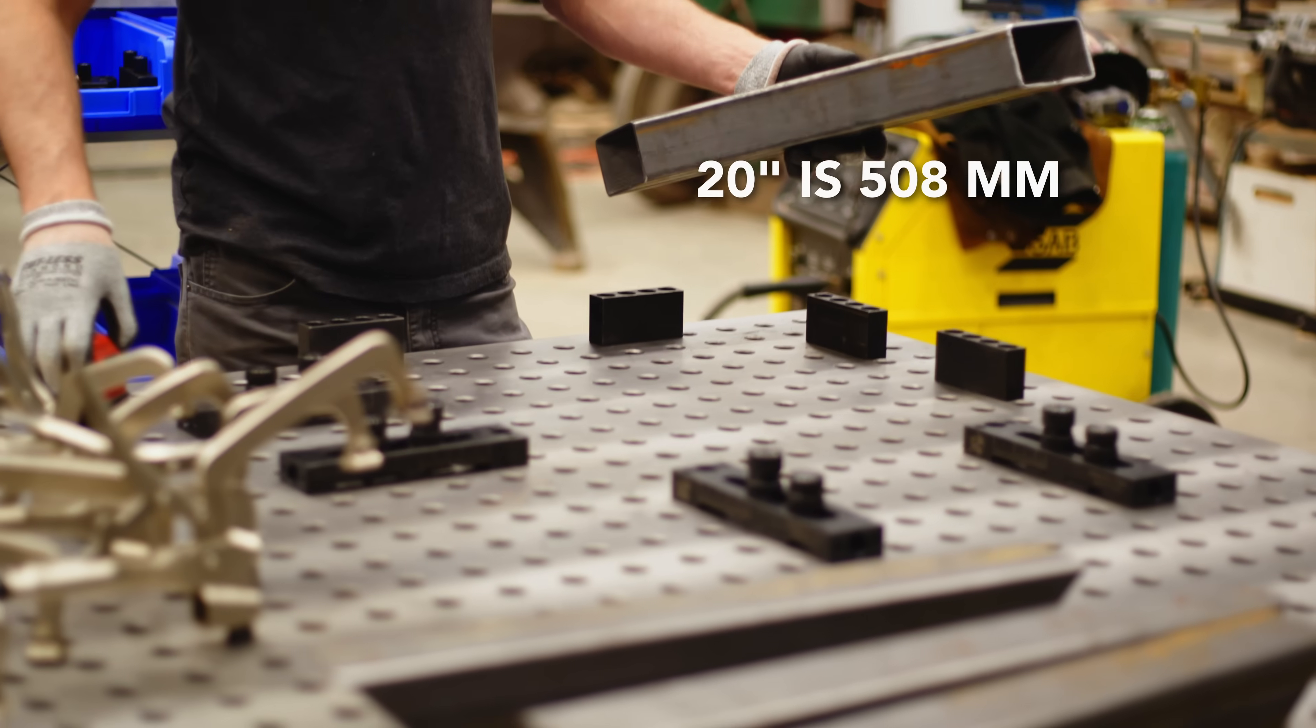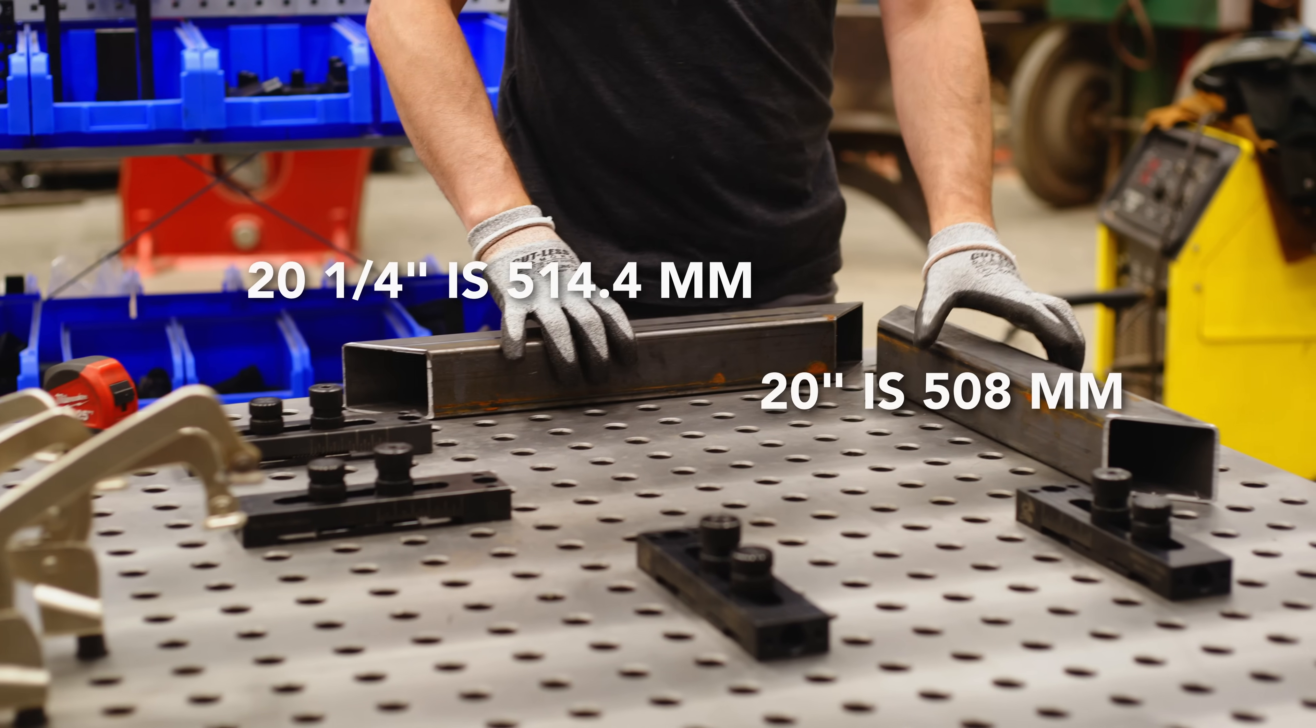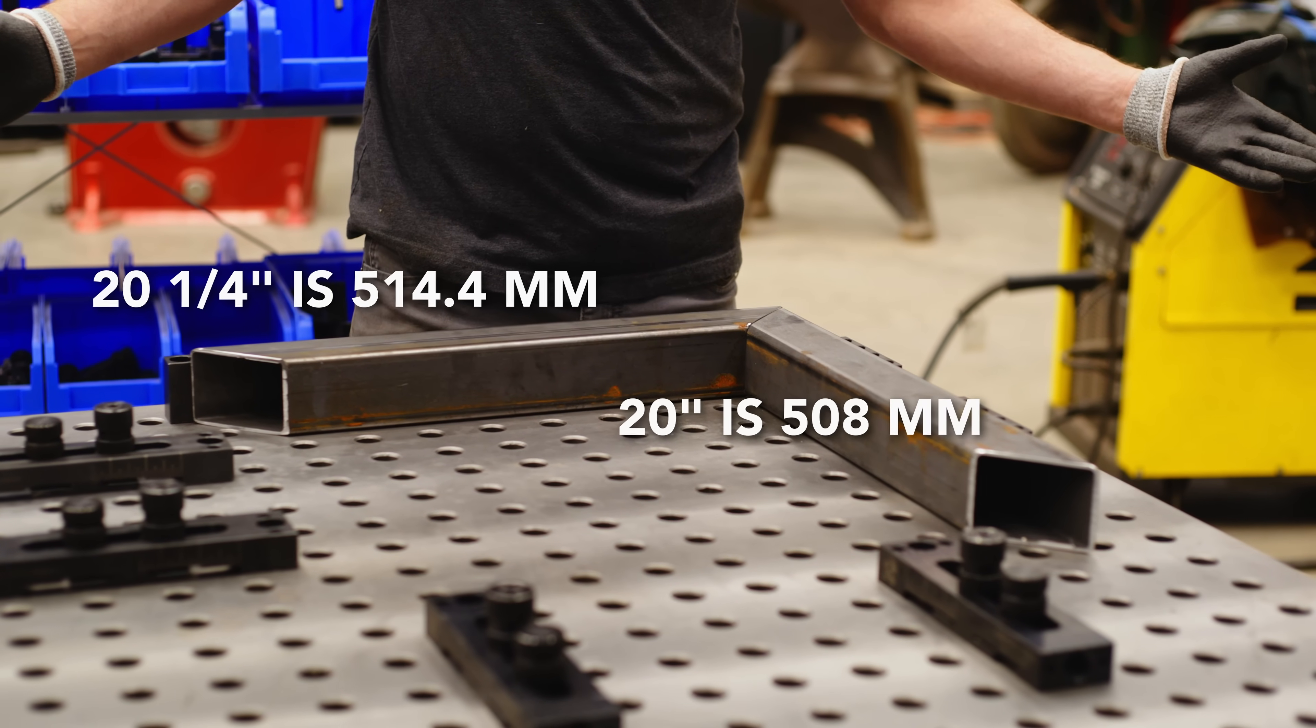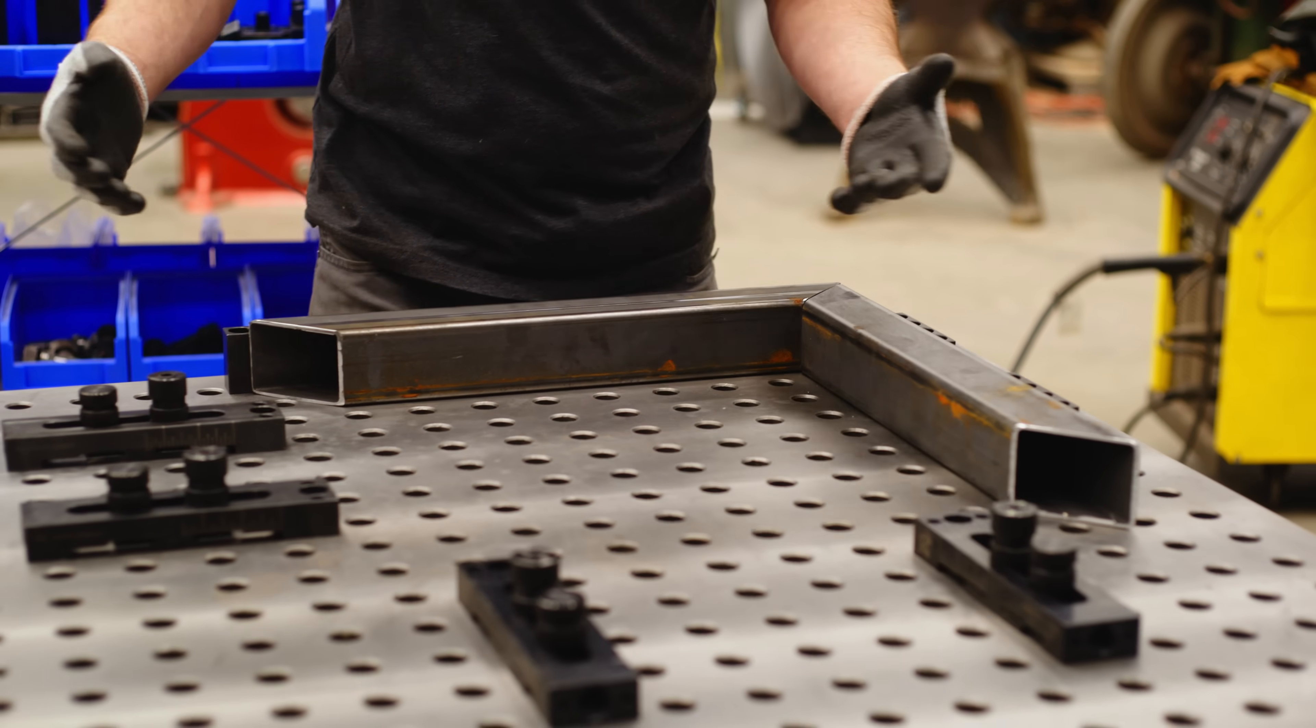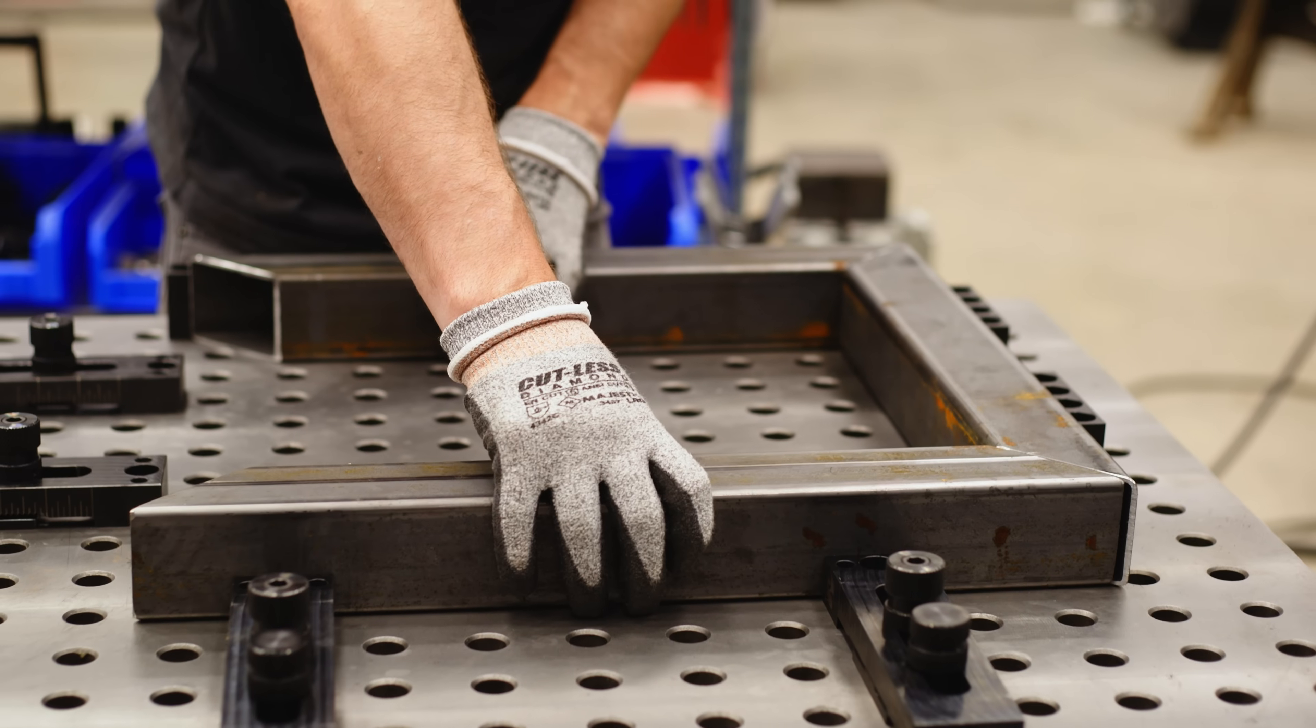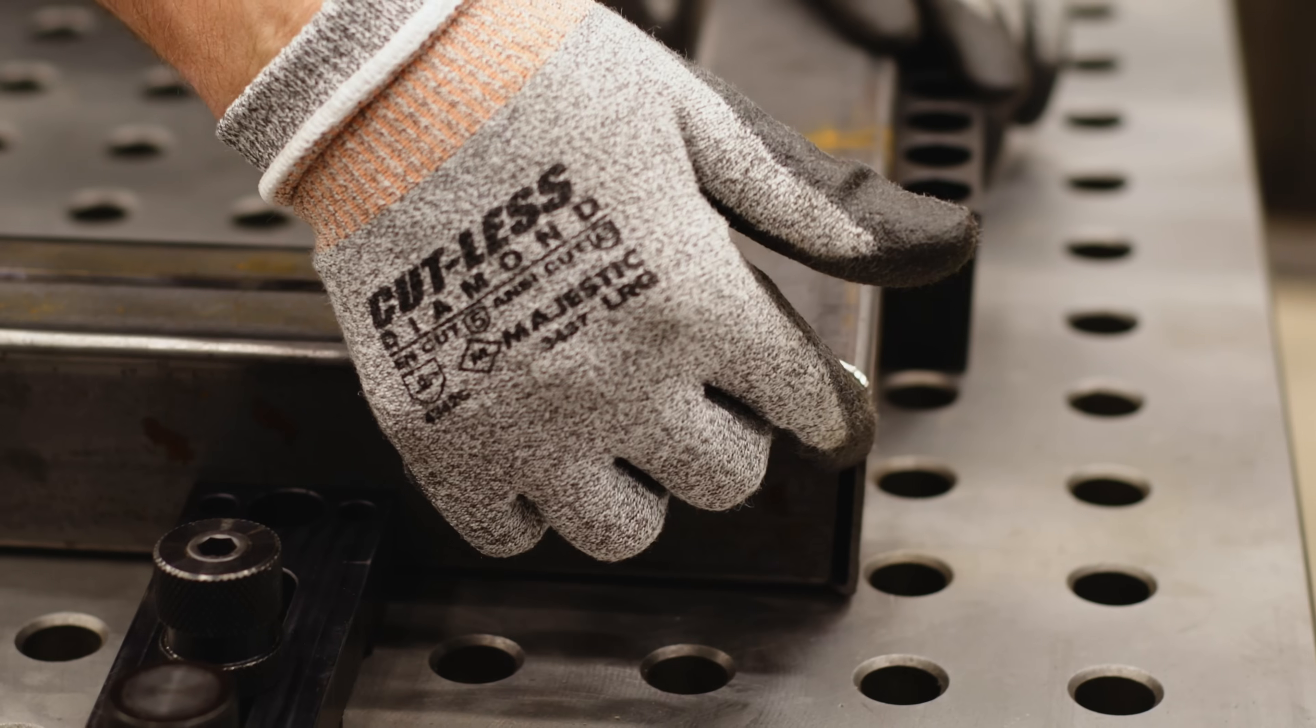So I'm going to take my 20 inch dimension and I'm going to put it over here and I'm going to get my 20 and a quarter and put it over here. And I can marry these into the corner. Everything's turning out great. No problems yet. I'm going to take my other 20 and a quarter. I'm going to put it over here. Everything's just kind of moving around. I'm already starting to see a problem. I see this gap right here.